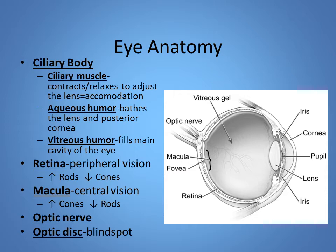The ciliary body or ciliary muscle contracts and relaxes to adjust the accommodation of the lens. Between the lens and the cornea, we have the aqueous humor — the fluid that bathes the lens and the posterior cornea — and it's more watery, which is why it's called aqueous. The vitreous humor is what's behind the lens, and it is thicker and more viscous, which is why it's called the vitreous humor.